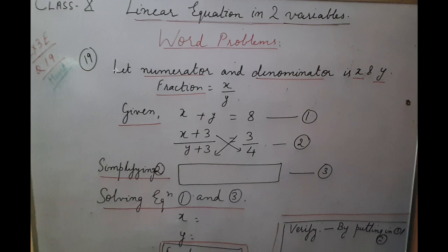Question number 19, R.S. Agrawal exercise 3E. It is given that there is a fraction whose numerator and denominator are such that the sum of the numbers is 8. That means if you add numerator and denominator, their sum is 8.